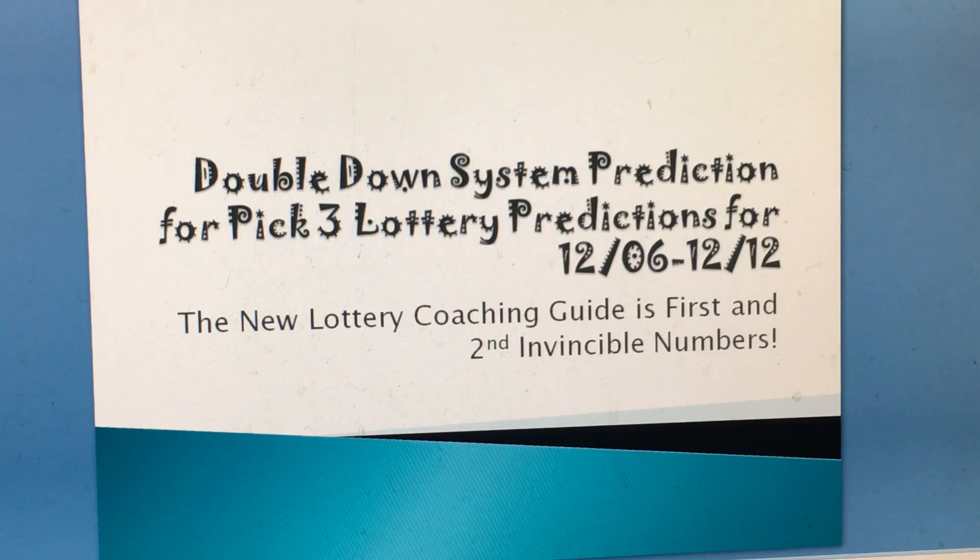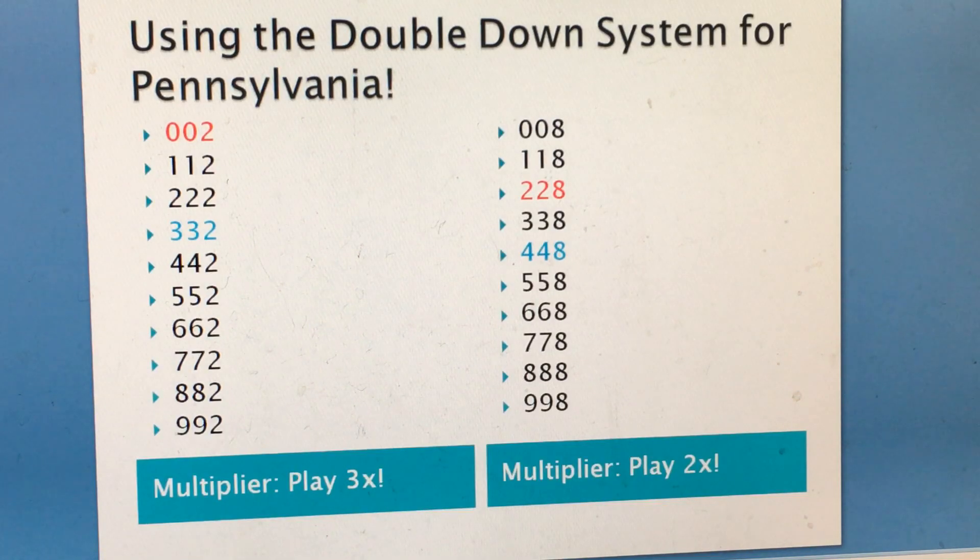Now, I initially predicted the double down system for 1206 to 12012 for Pennsylvania. And let's see what the result is. So far I hit one straight and these are the lists. Now, if you go to set 1, set 2, the multipliers are 3 and 2.